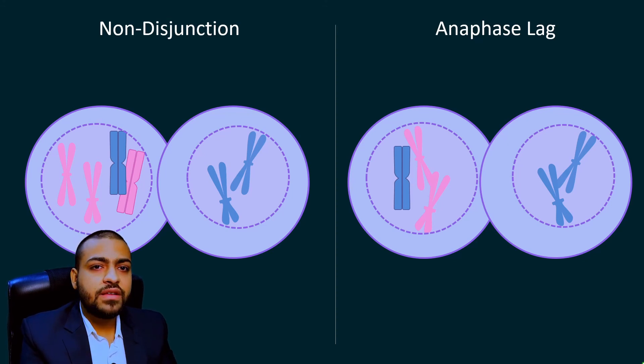So what happens in non-disjunction? Both of the daughter cells will be abnormal, one will have extra chromosome while other will have one less chromosome, there will be loss of a chromosome. But compare that with anaphase lag, one cell will be pretty much normal but other cell will have monosomy. Clear.